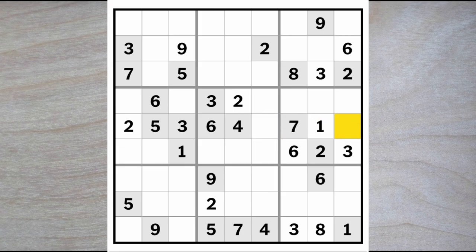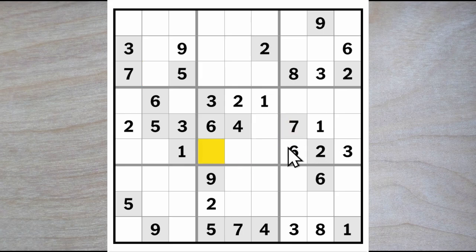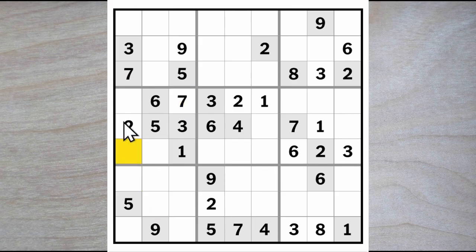Now these must be an 8 and a 9. This 1 blocks across, giving us a 1 here. One of these is a 1 and we have a 1 in one of these two squares — this is a 1, 4 and this is a 1, 4. We have a 7 blocking here, so one of these two squares must be a 7 blocking across. This 7 blocks down, so here's a 7. A 7 must go here or here, and we're looking for an 8, a 4, and a 9 — one of these must be a 9.